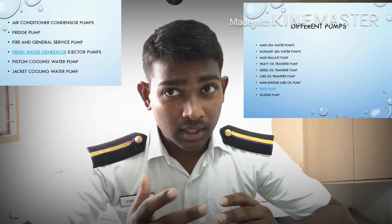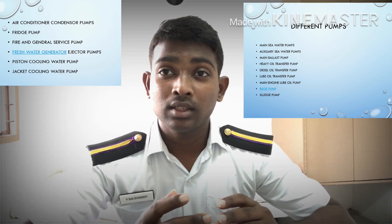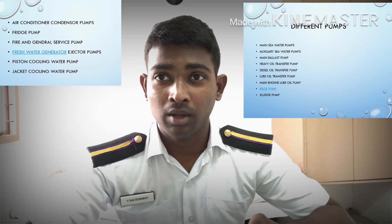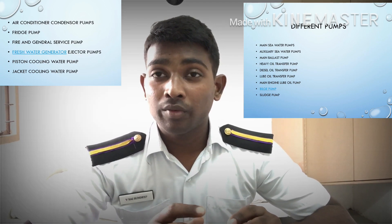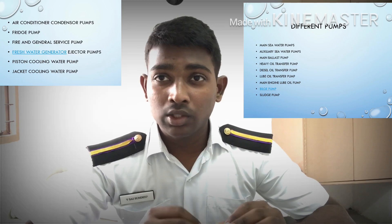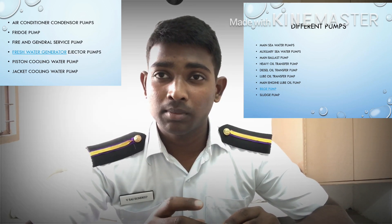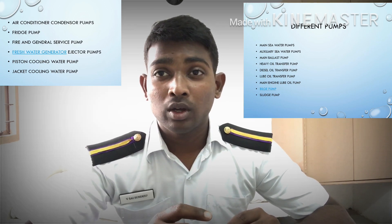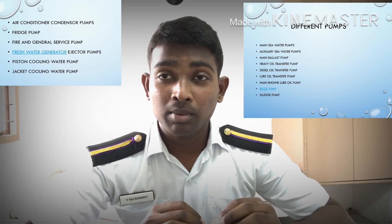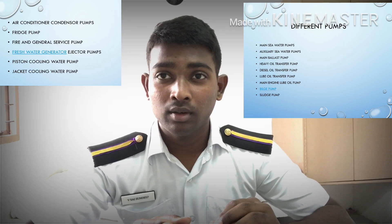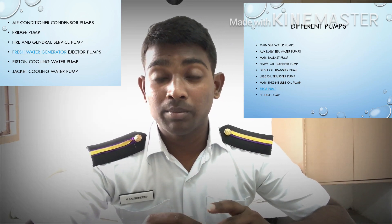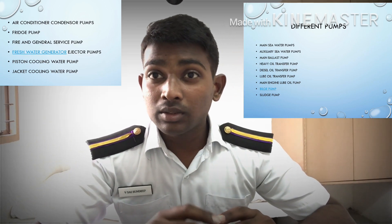The fire and general service pump — this is an emergency fire pump located in the bottom platform of the ship. It is used when there is a fire on board. Hoses connected to the fire pump in different locations are used to stop the fire. The inlet of this fire pump draws sea water from overboard.